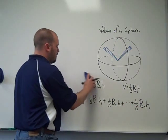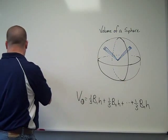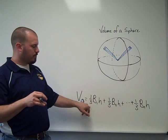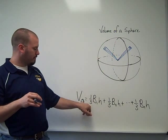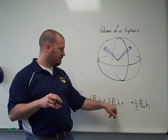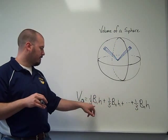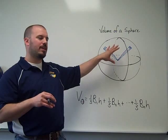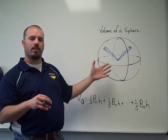All right, so now we're just going to look at doing a little bit of algebra on this formula. Now, every term has some things in common. Every term has one-third, and every term has the height of the pyramid. You know, the height of the pyramid, actually, is just the radius of the sphere.